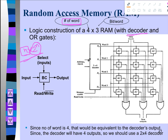So the decoder has two address inputs and four outputs. These four outputs can be named as words, counted from 0: word 0, word 1, word 2, and word 3. Those are the four words.